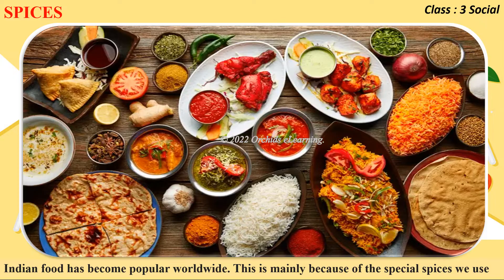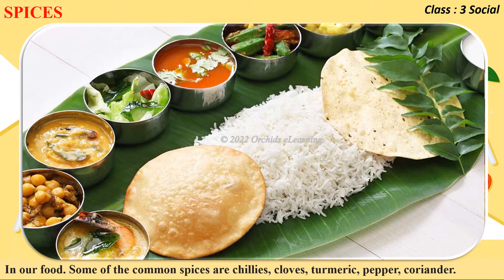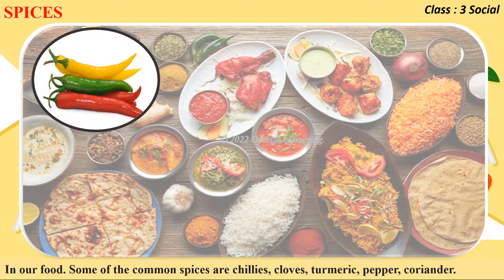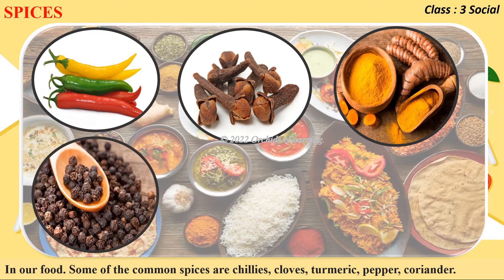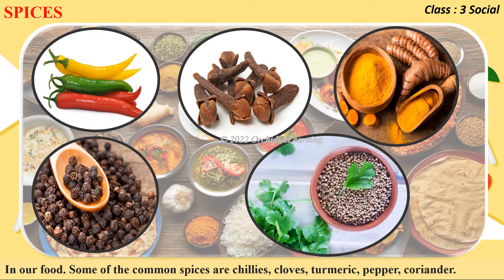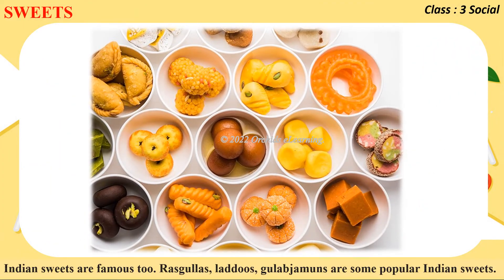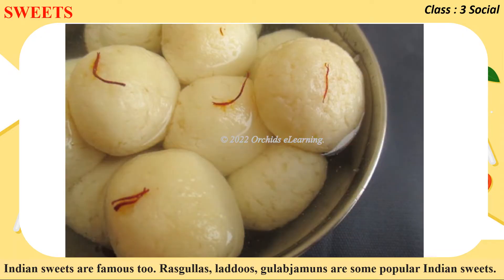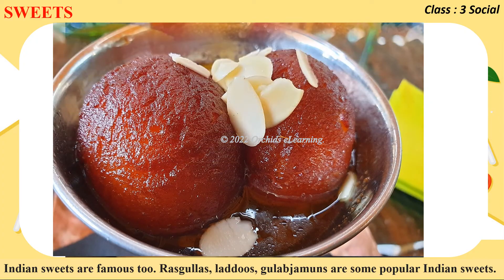Indian food has become popular worldwide, mainly because of the special spices we use. Some of the common spices are chillies, cloves, turmeric, pepper, and coriander. These spices add flavor, color, and taste to our food. Indian sweets are famous too — rasgullas, laddus, and gulab jamuns are some popular Indian sweets we enjoy at weddings and festivals.